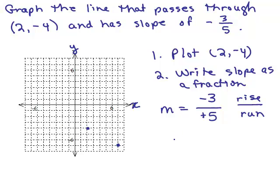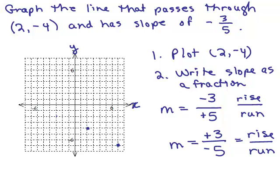To get points to the left, write the slope as positive 3 over negative 5, which also reduces to negative 3 fifths. When the denominator is negative, you find points to the left; when positive, you find points to the right. From 2, negative 4, go left 5 spaces and up 3. Do that again from the new point: left 5, up 3. Now we have many points, making it easier to draw the line.